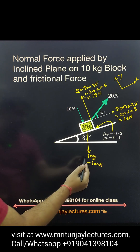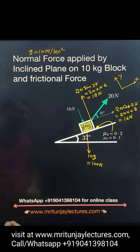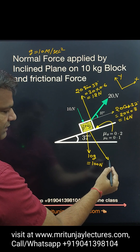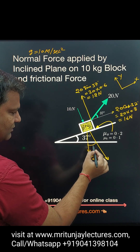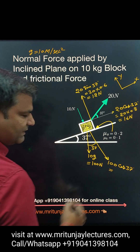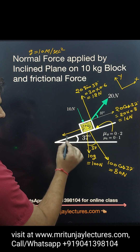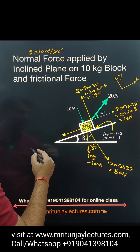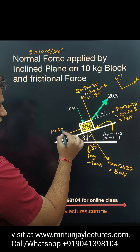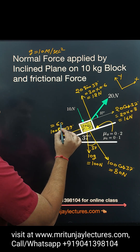Now, taking g equal to 10 meters per second squared, the weight is 100 Newton. Component of 100 Newton along the inclined direction — if the incline angle is 37, that angle is also 37. So 100 cos 37 is 0.8, giving 80 Newton. And the component of 100 Newton along the Y axis is 100 sin 37, which is 0.6, giving 60 Newton.